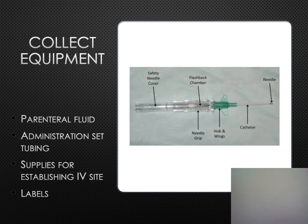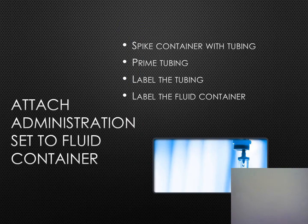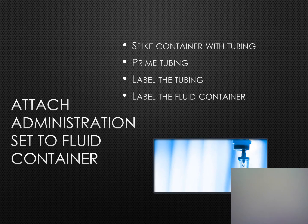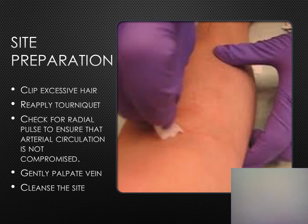You'll also need a solution container label, which can vary by facility. Attach the administration set to the fluid container — always close the roller clamp on the tubing first. Remove the cap from the spike and the insertion port on the fluid container, then carefully insert the spike into the port. If it's a plastic fluid container, take extreme care not to puncture it. Place a tubing label on the administration set indicating when it needs to be changed per facility policy, and label the fluid container with the fluid, medications added, and any other facility requirements.